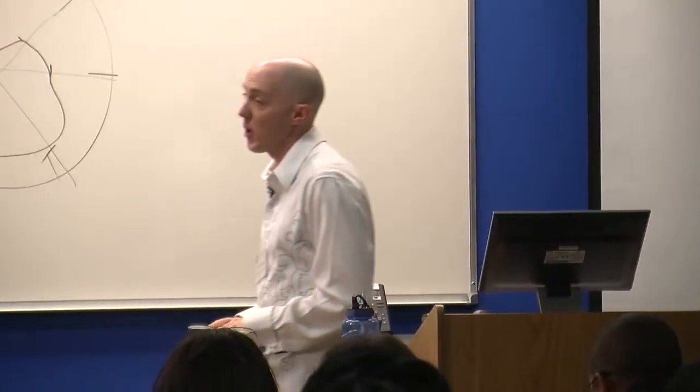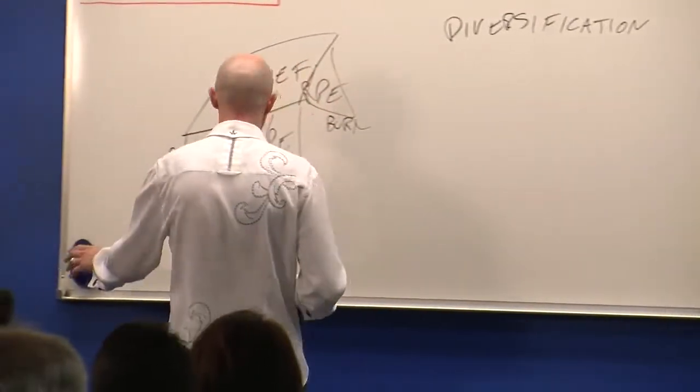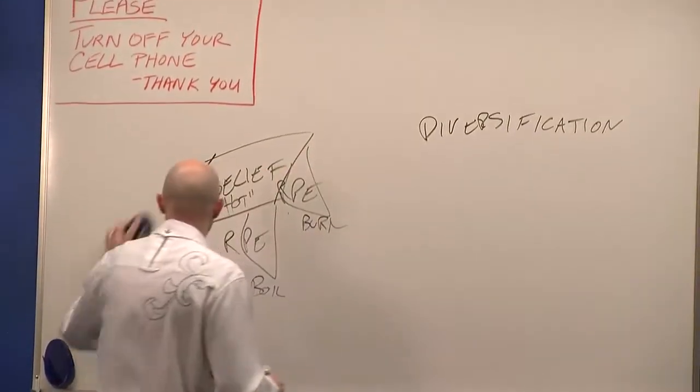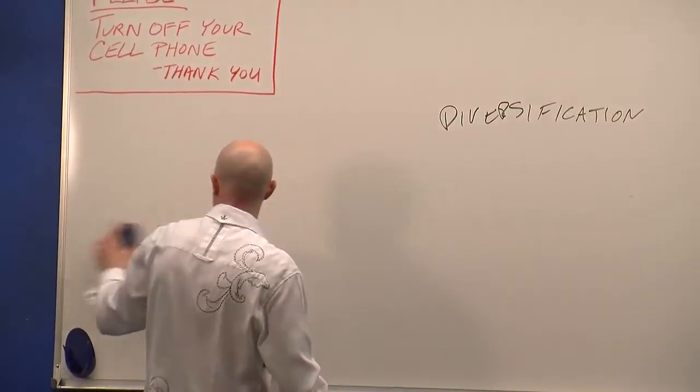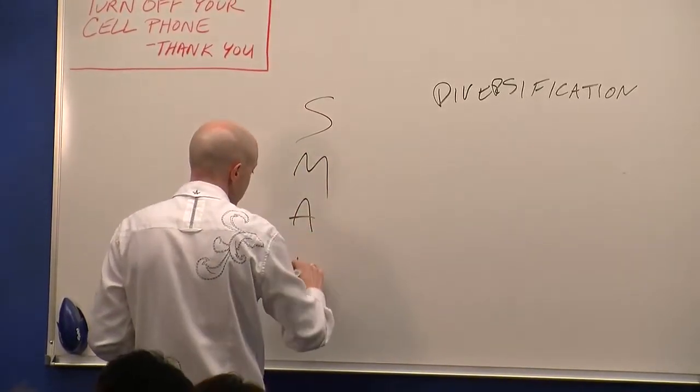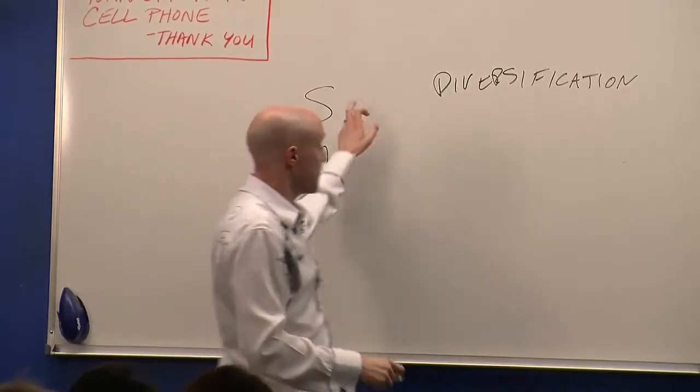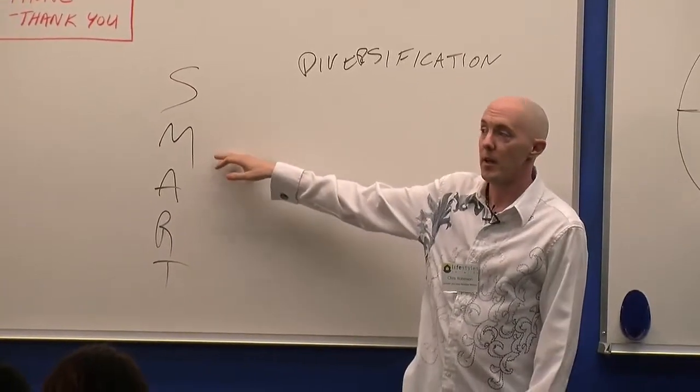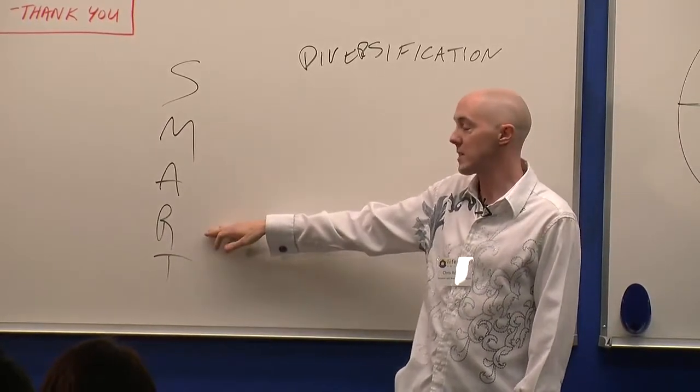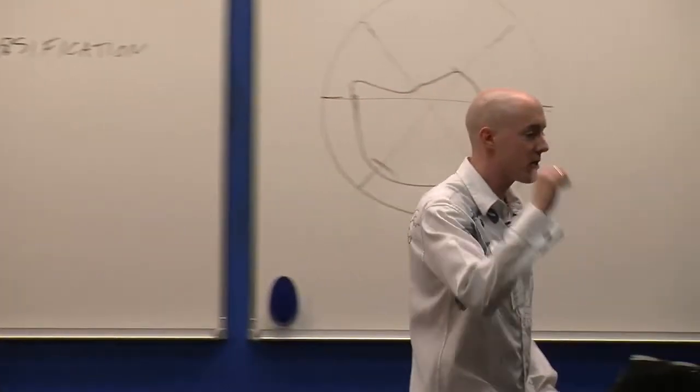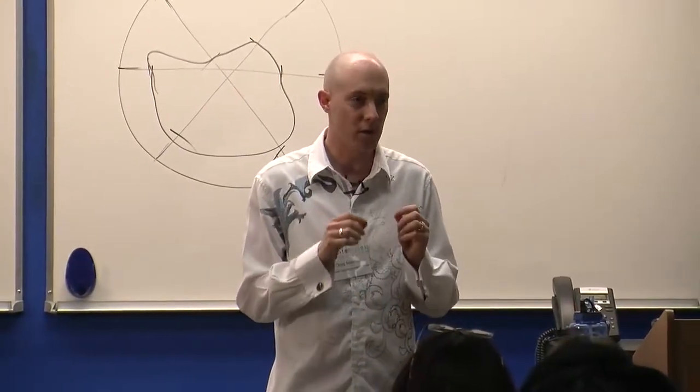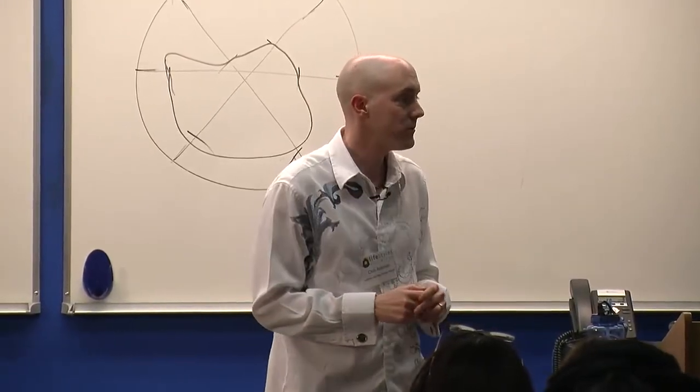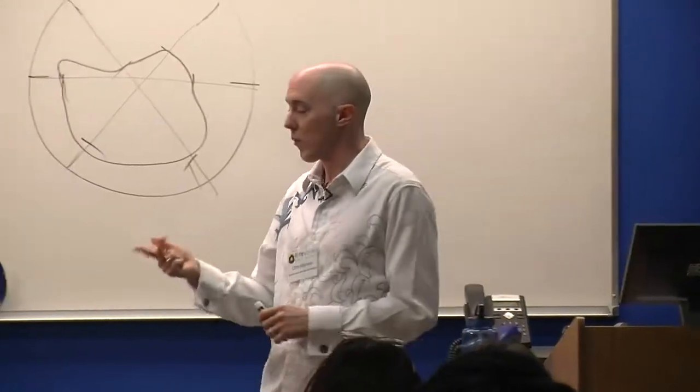Now, the next thing you need to learn is your goal should be SMART. And what I mean by this is it's actually an acronym that stands for the five things that you need to use to make your goals. Your goals should be specific. They should be measurable. They should be attainable. They should be realistic. And they should be timely.